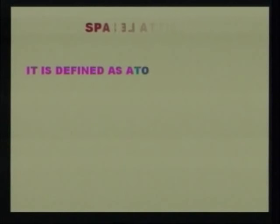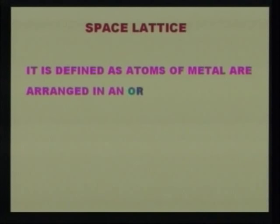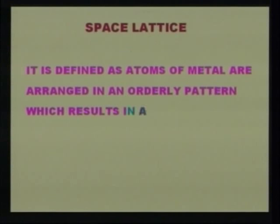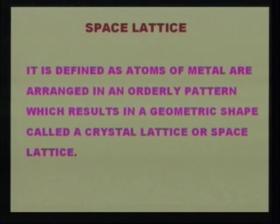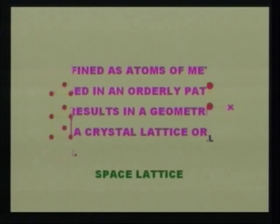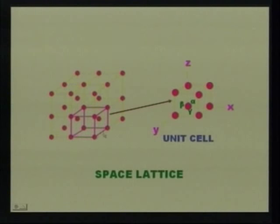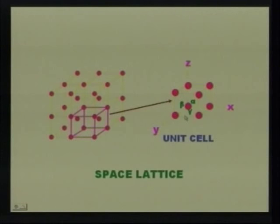Space lattice is defined as atoms of metal arranged in an orderly pattern which results in a geometric shape called a crystal lattice or space lattice. Here you can see a space lattice where atoms are orderly arranged in a cubic cell. A space lattice contains a number of cubic or unit cells. In every corner there are atoms arranged in an orderly manner. The unit cell is defined along three axes: x, y, and z.